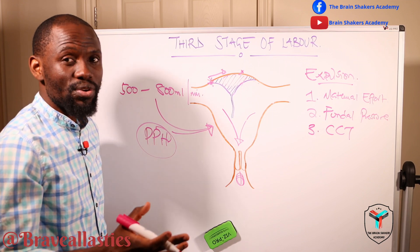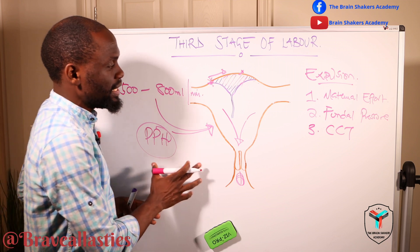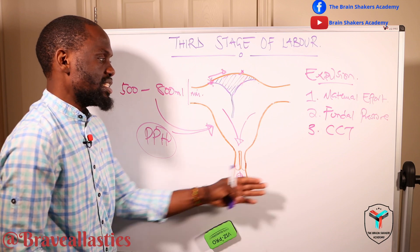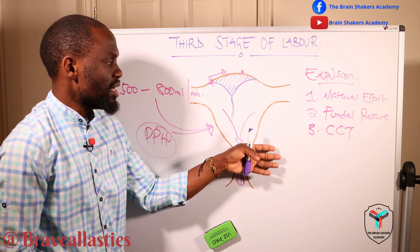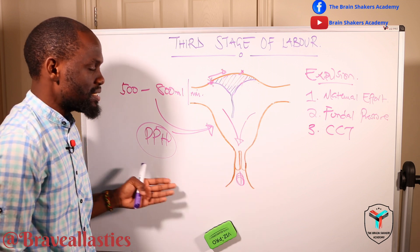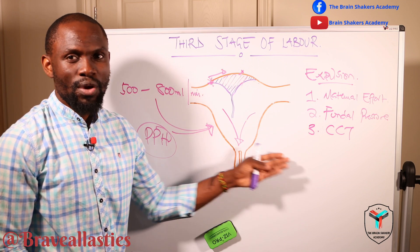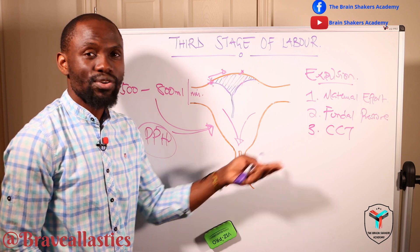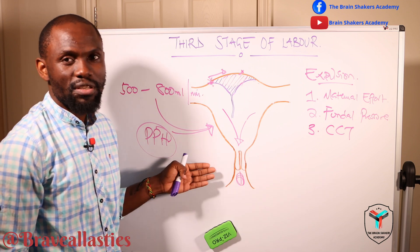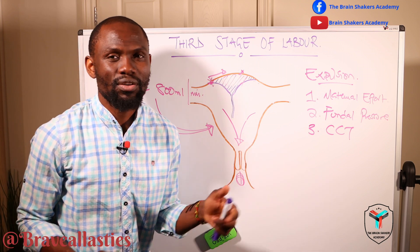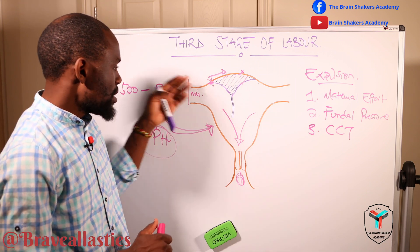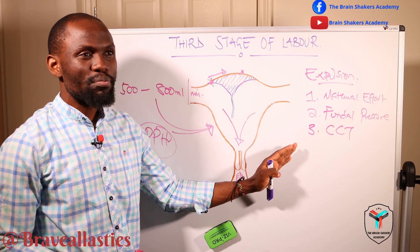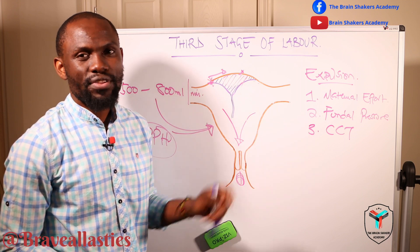Postpartum hemorrhage is covered in a separate video, but basically, any amount of blood that causes hematological changes or a deterioration in the clinical picture of the woman who has delivered may be classified as postpartum hemorrhage. In most cases we use the average of 500 mls as a basis for action. Anything below 500 mls may be deemed within normal limits, but that is also dependent on iron levels. The fourth stage of labor is essentially a stage in which there must be a return to homeostasis.